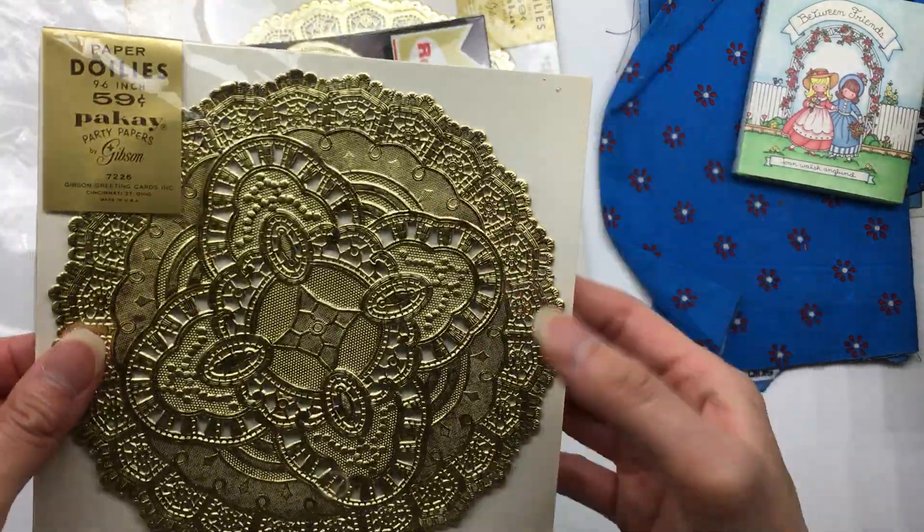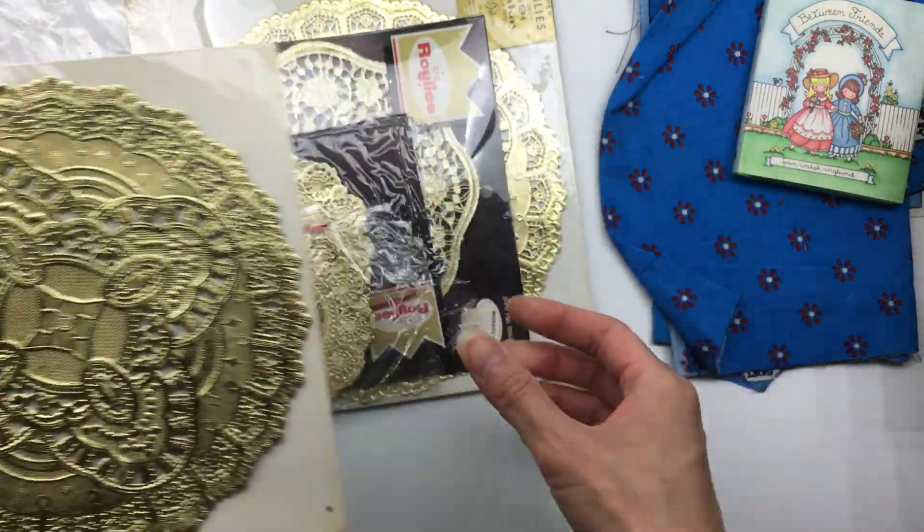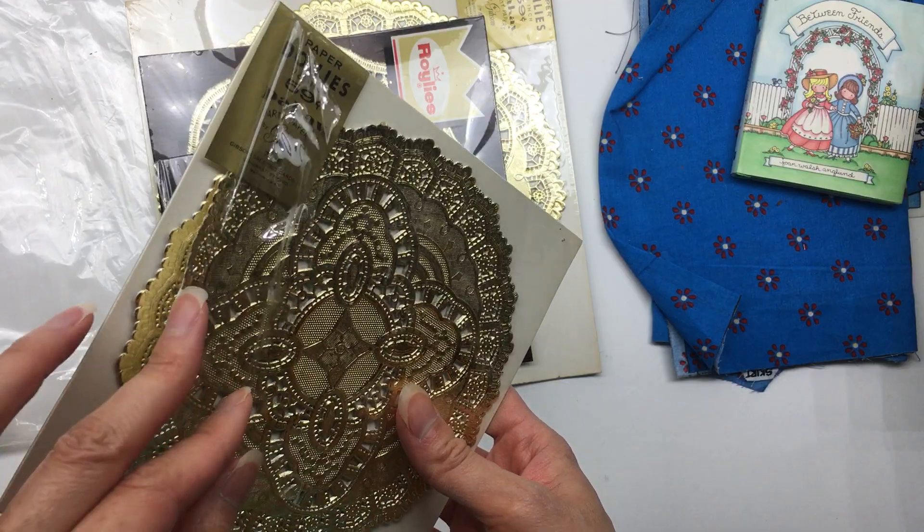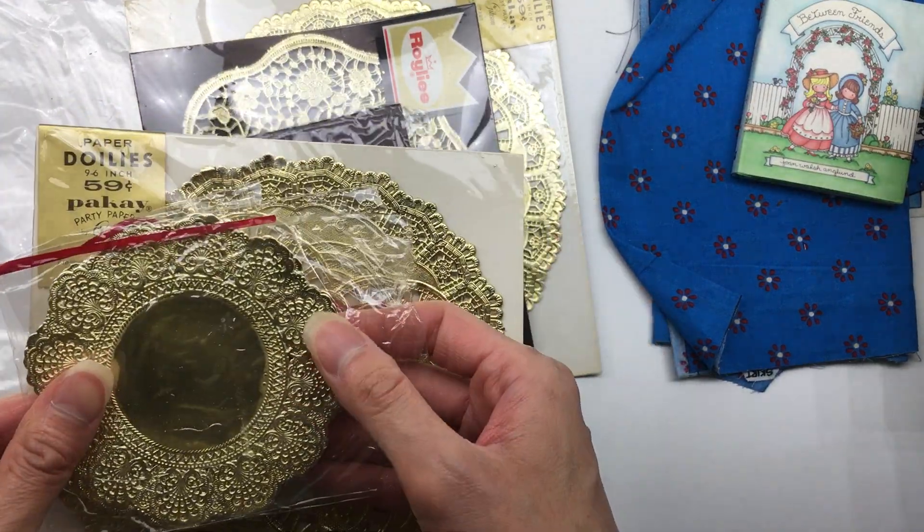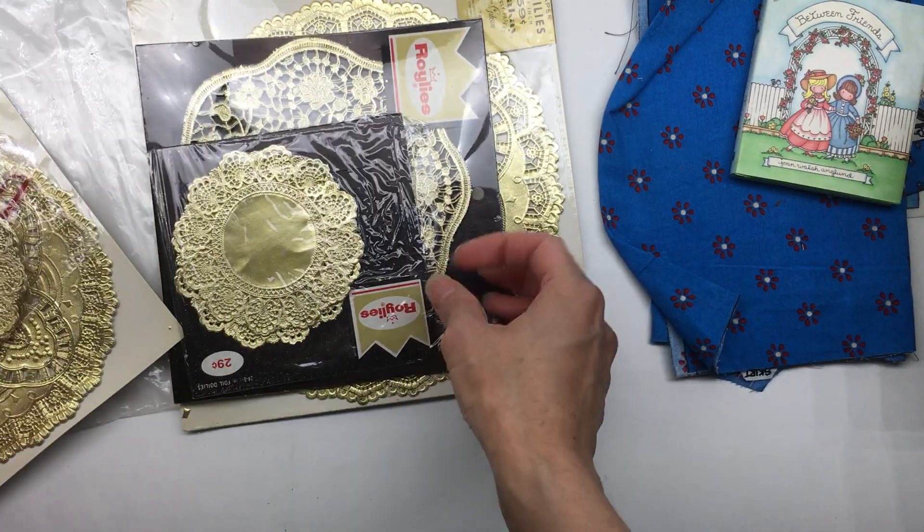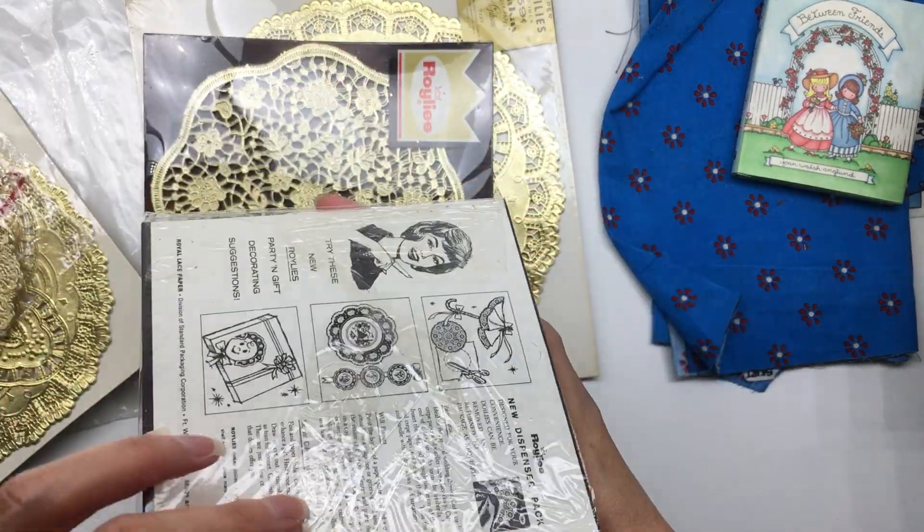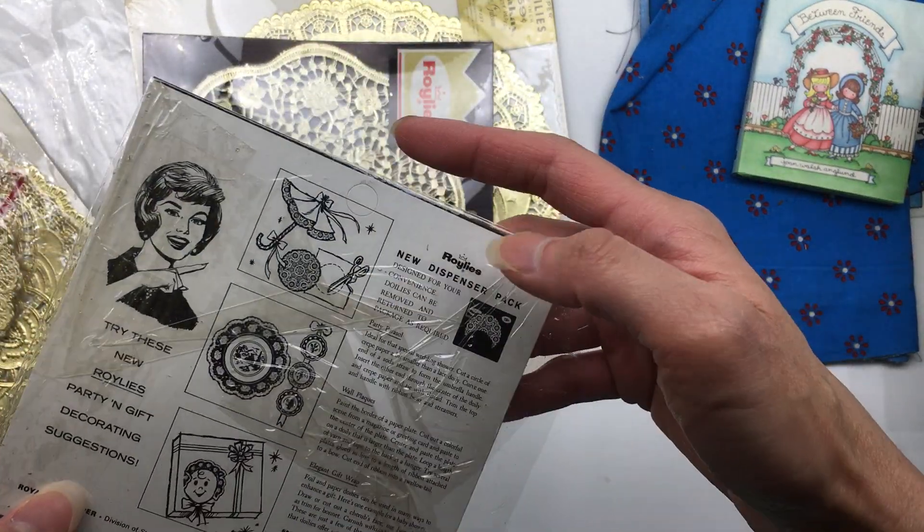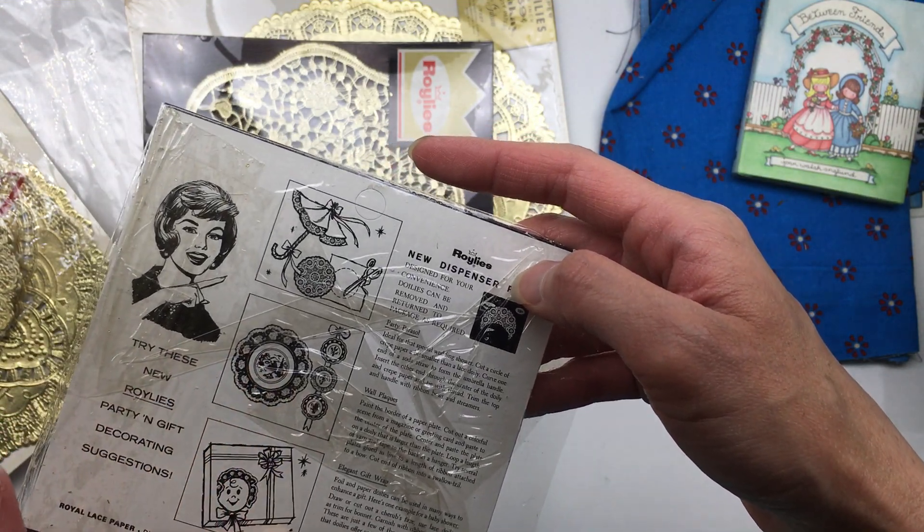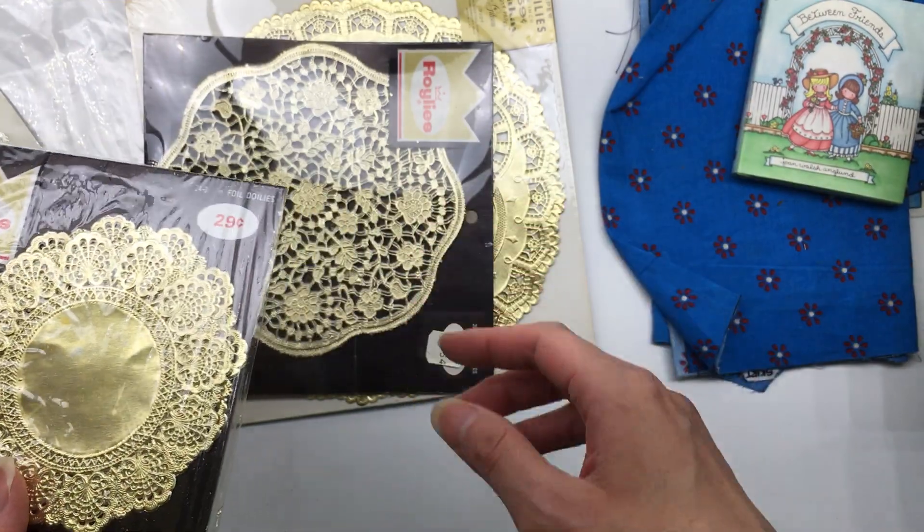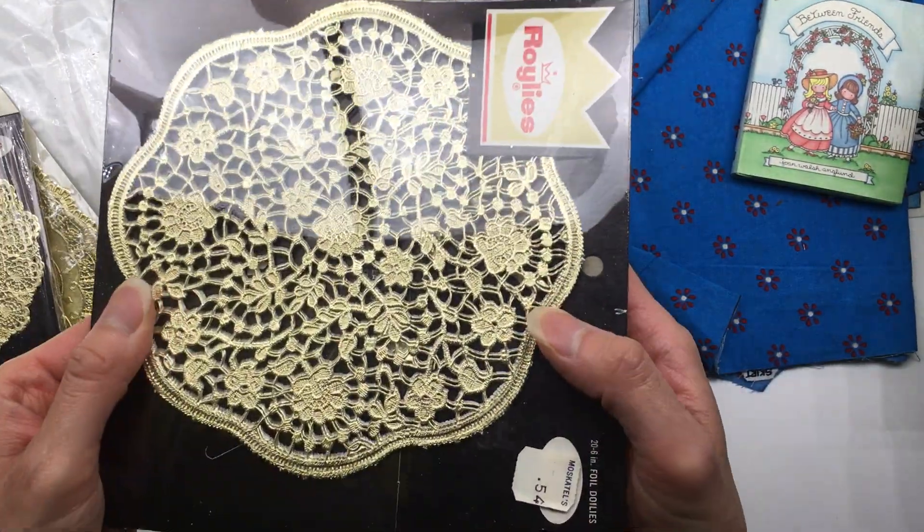They're gold doilies. And they are just, they're almost obnoxious because they're so gold. But what I do sometimes, well the packaging is kind of cute. Okay, so what I do, I like this one a lot.